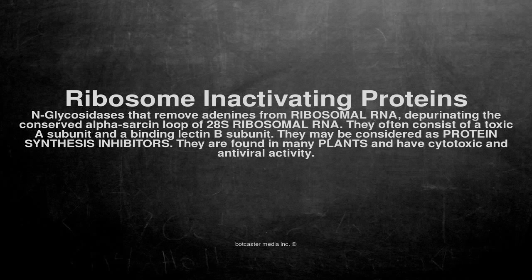Ribosome Inactivating Proteins are N-glycosidases that remove adenines from ribosomal RNA, depurinating the conserved alpha-sarsin loop of 28S ribosomal RNA.